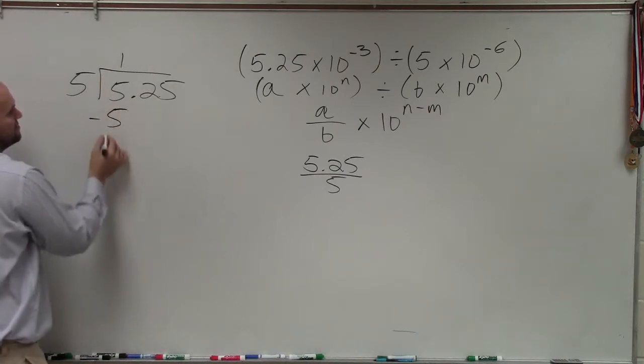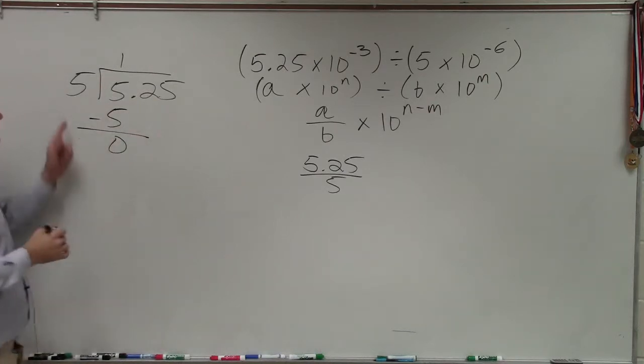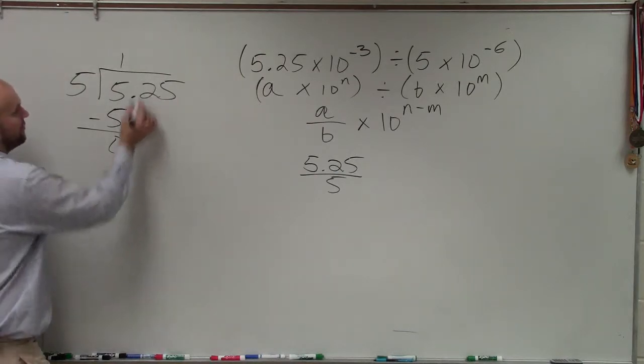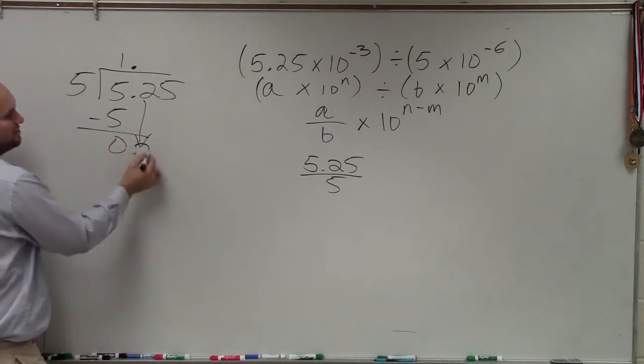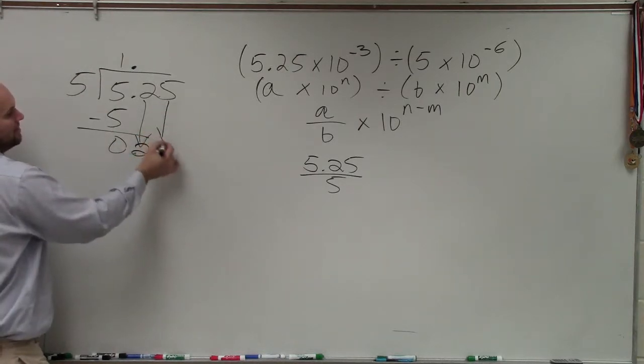1 times 5 is 5. Subtract. Get 0. Does 5 go into 0? No. So we have a decimal point. Bring down the 2. Does 5 go into 2? No.